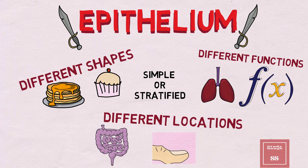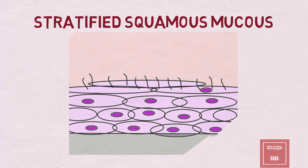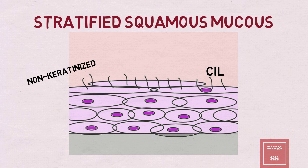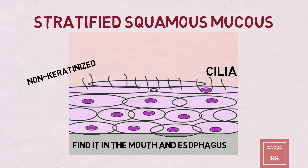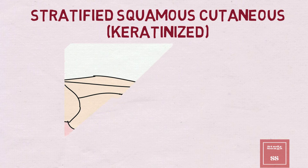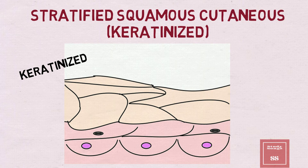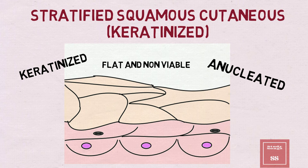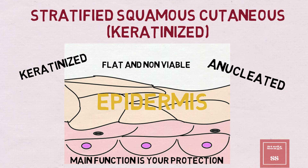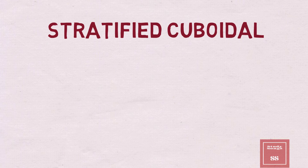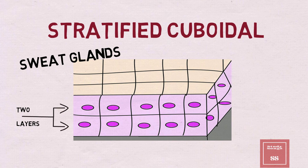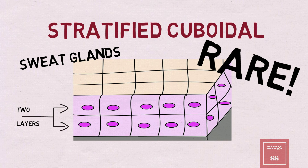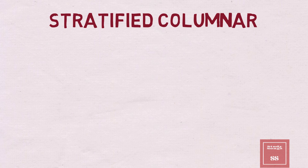Stratified squamous mucosus — non-keratinized. Find it in the mouth and esophagus; they lubricate with mucus. Stratified squamous keratinized — anucleated but non-viable in the epidermis; their main function is protection. Stratified cuboidal — only two layers, only in sweat glands; they're really rare.